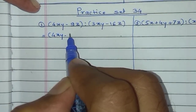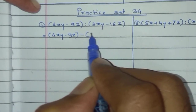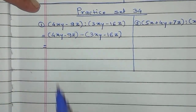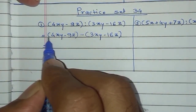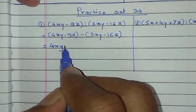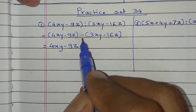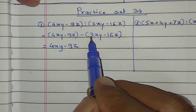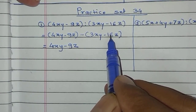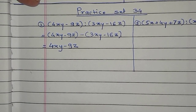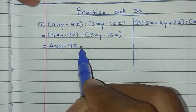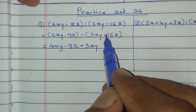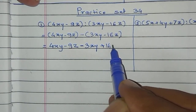We write: 4xy minus 9z, minus 3xy minus 16z. Now remove the bracket. Here plus sign is there, so no sign changes — everything comes down as it is. Now, because of this minus sign, the signs of 3xy and 16z change. Means plus 3xy will become minus 3xy, and minus 16z will become plus 16z. In other words: minus multiplied by plus becomes minus, giving minus 3xy; and minus multiplied by minus becomes plus, giving plus 16z.